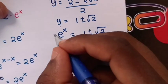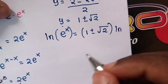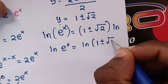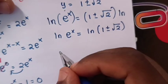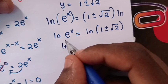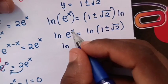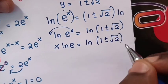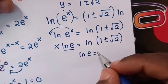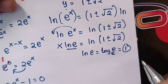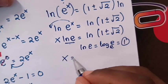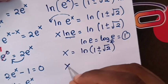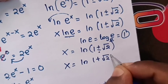We apply ln on both sides to find the value of x. So ln of e power x equals ln of the quantity 1 plus or minus square root of 2. This simplifies to x equals ln of 1 plus or minus square root of 2.